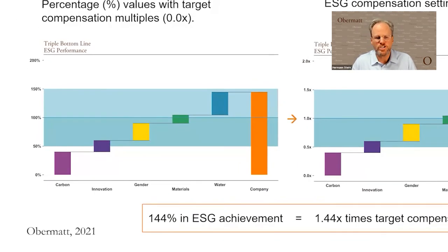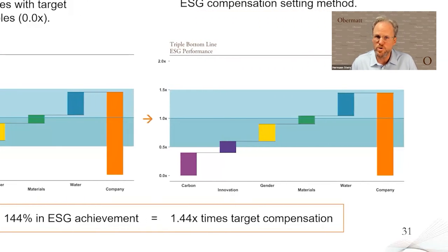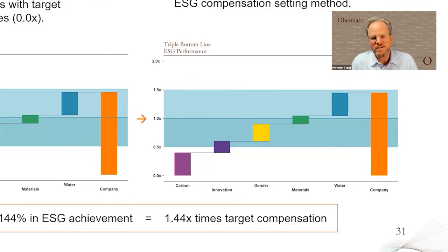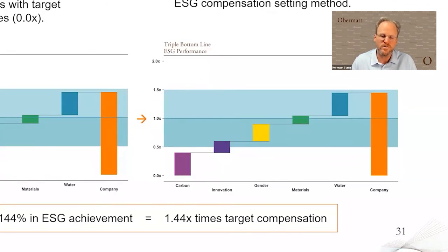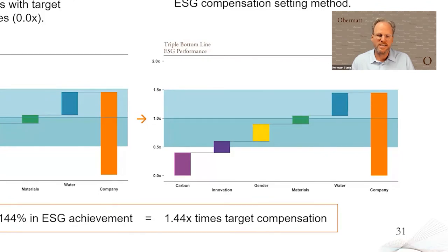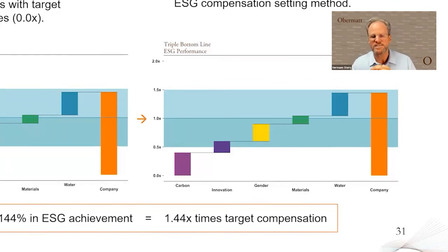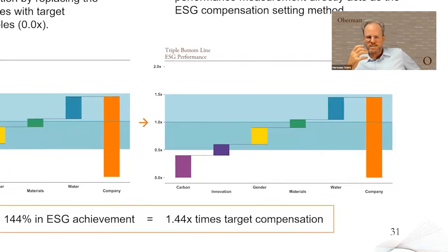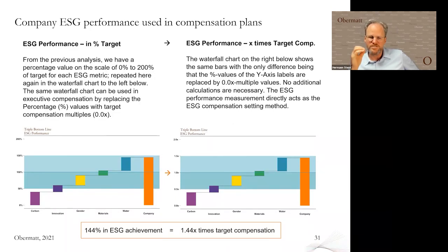On the left side is the chart scaled from zero percent to 200 percent. The only thing we have to do to convert that into a compensation scale is change the vertical axis — it goes from zero times bonus to one times bonus to two times target bonus. So the only change needed is the scale. A 144 percent ESG achievement turns into 1.44 times target compensation. Looking at this consolidated ESG performance representation makes ESG compensation really easy to understand.